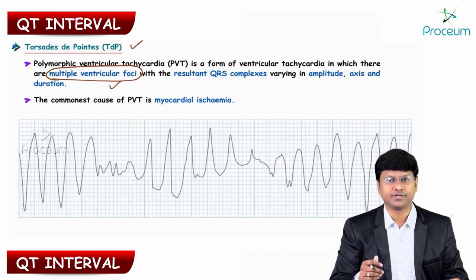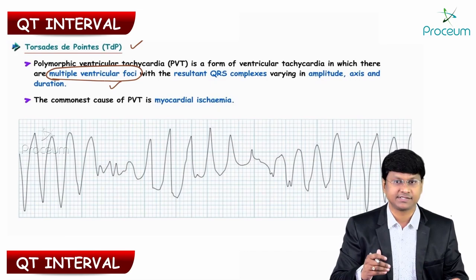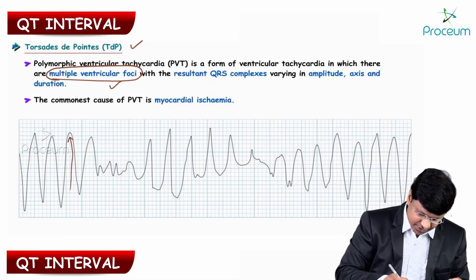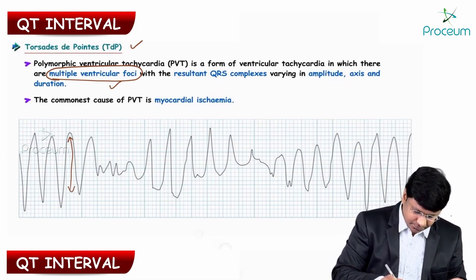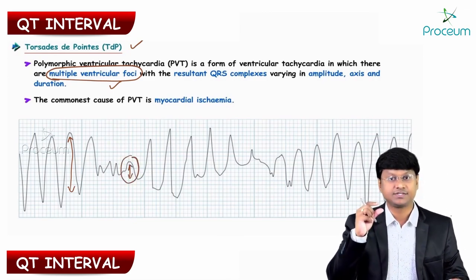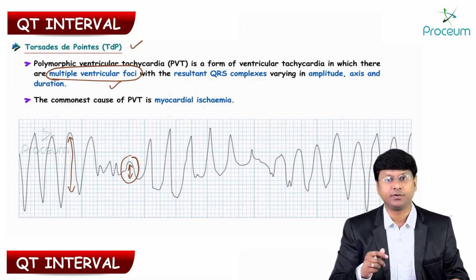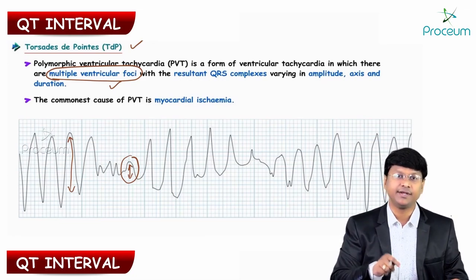Because of multiple ventricular foci, the QRS complexes will have varying amplitude as well as axis. For example, this QRS complex has a very large amplitude while another complex is small. So polymorphic ventricular tachycardia is a form of ventricular tachycardia with multiple ventricular foci resulting in QRS complexes varying in amplitude, axis, and duration.